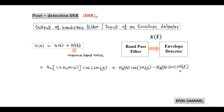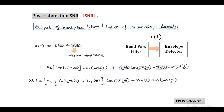Combining the common terms, we get: X(t) = [AC + AC·KA·m(t) + NI(t)]·cos(2πfct) − NQ(t)·sin(2πfct).